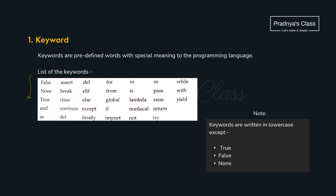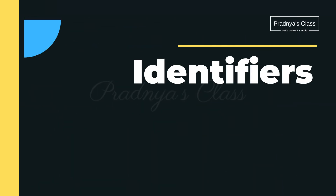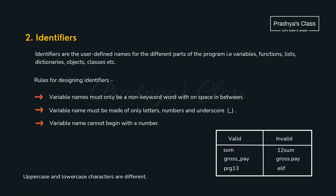Here is the list of keywords. All keywords are written in lowercase letters except True, False, and None — look at the first letter, it is capital. The second token is identifiers. Identifiers are names given to different parts of the program, used to give identity just like our name gives identity to us. Just as we follow common sense when naming things, we follow certain rules here.